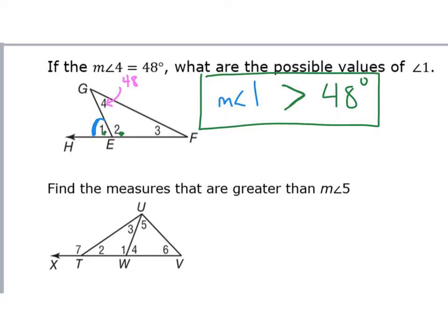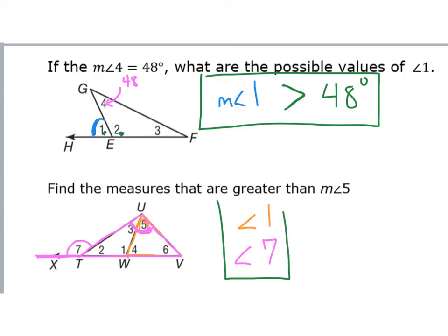Find the measures that are greater than angle five. Angle five is a remote interior angle for this triangle here on the right-hand side. So that means that remote interior angle has to be less than the exterior angle if I extend this side, and the exterior angle is angle one. So I know angle one has to be bigger than angle five. But there's more — because angle five is also part of the remote interior angle for the whole triangle, which means angle five has to be smaller than the exterior angle for that triangle too. So angle seven also has to be bigger than angle five. There might be more angles greater than angle five, but none that I can prove — especially since the picture isn't to scale.